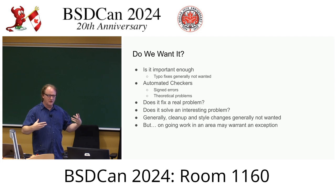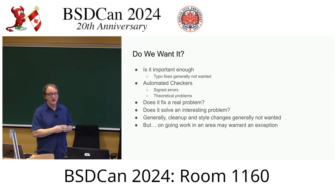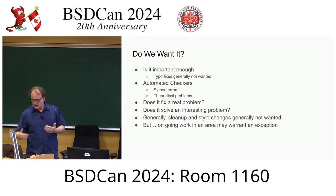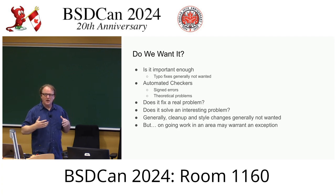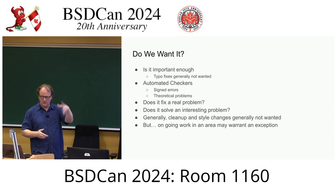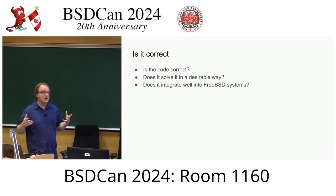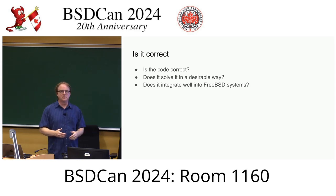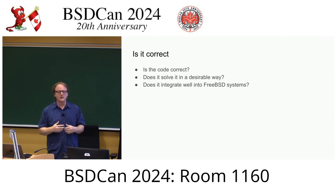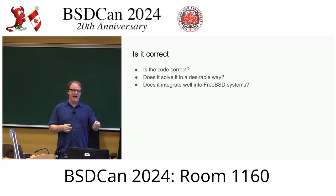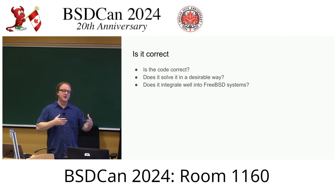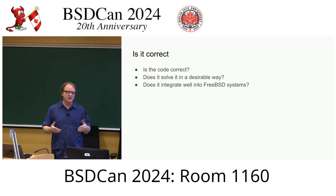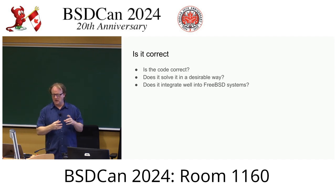We'll evaluate: does it fix a real problem, solve something worth our time? We'll make that evaluation initially and provide feedback. Then we check: is this change correct? You say it prevents a buffer overflow — does it really? Did you deal with all the edge cases? You changed the man page to say this does something — does it really do that? Or is there a better way to say it? That's the code review part.